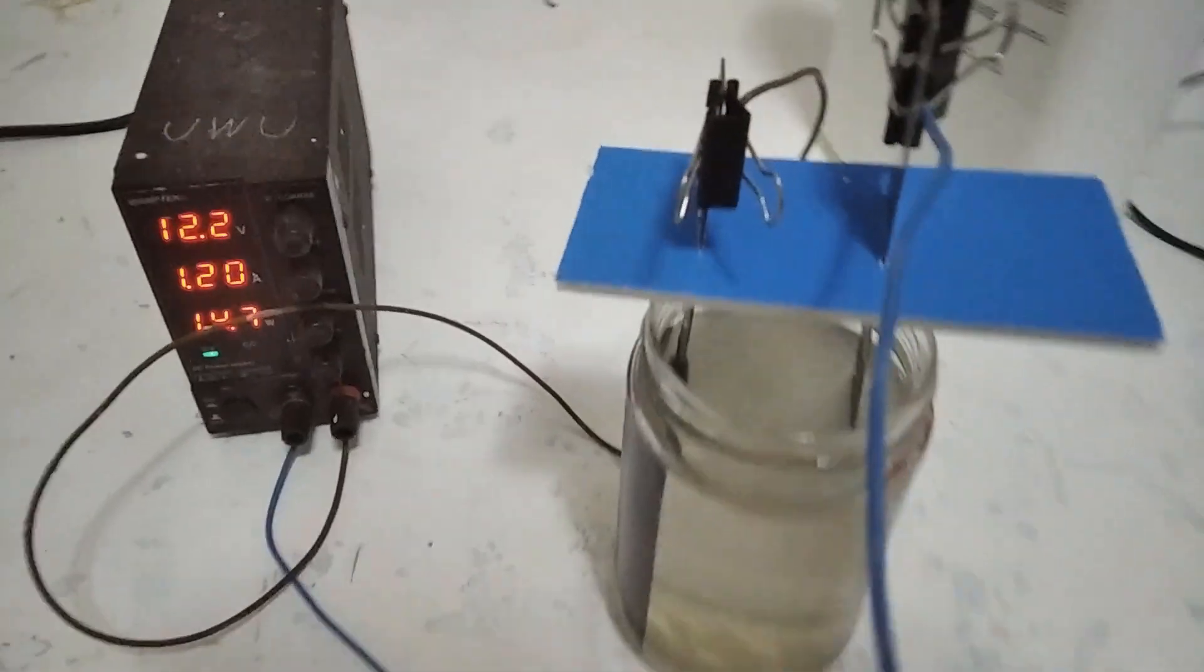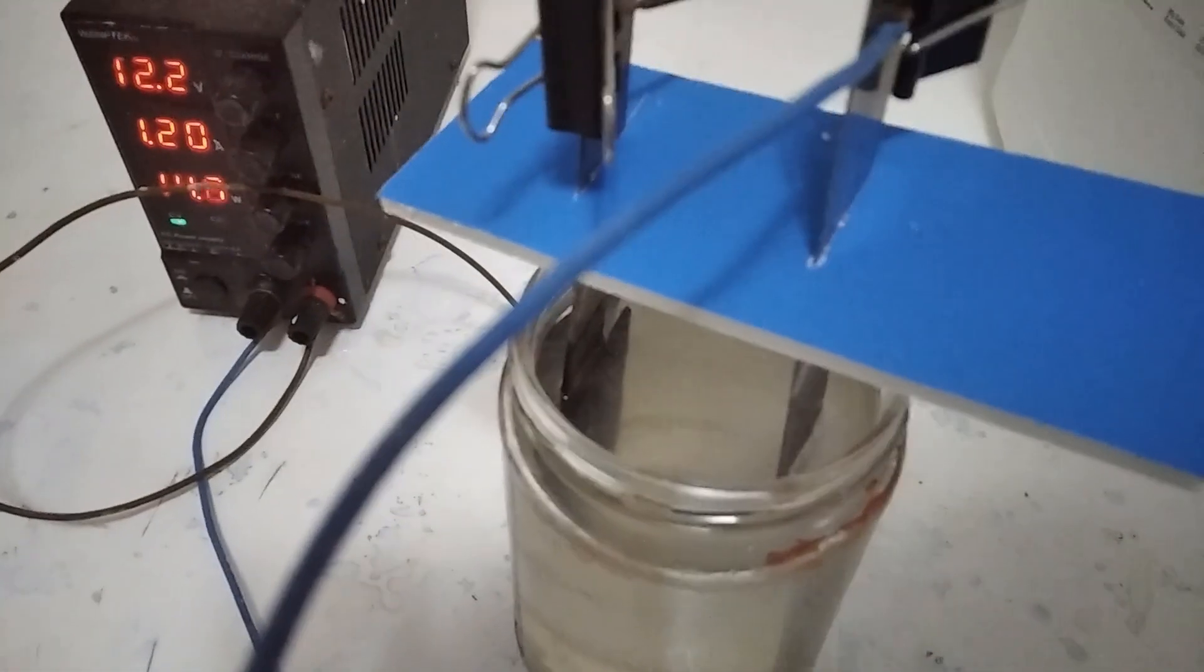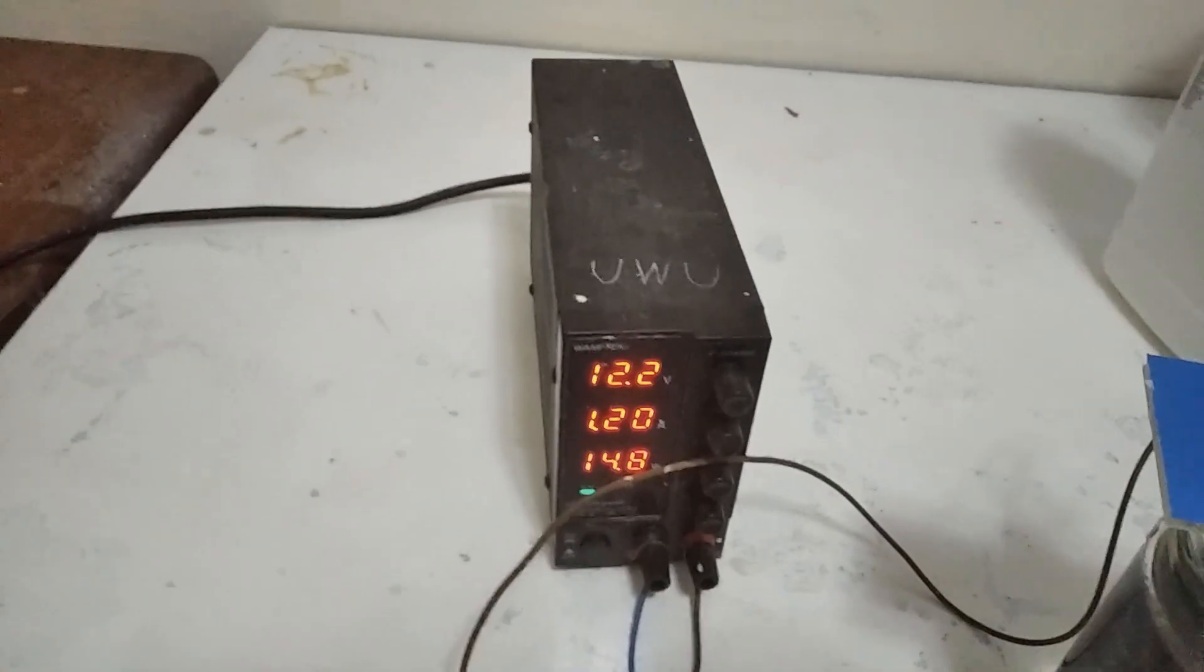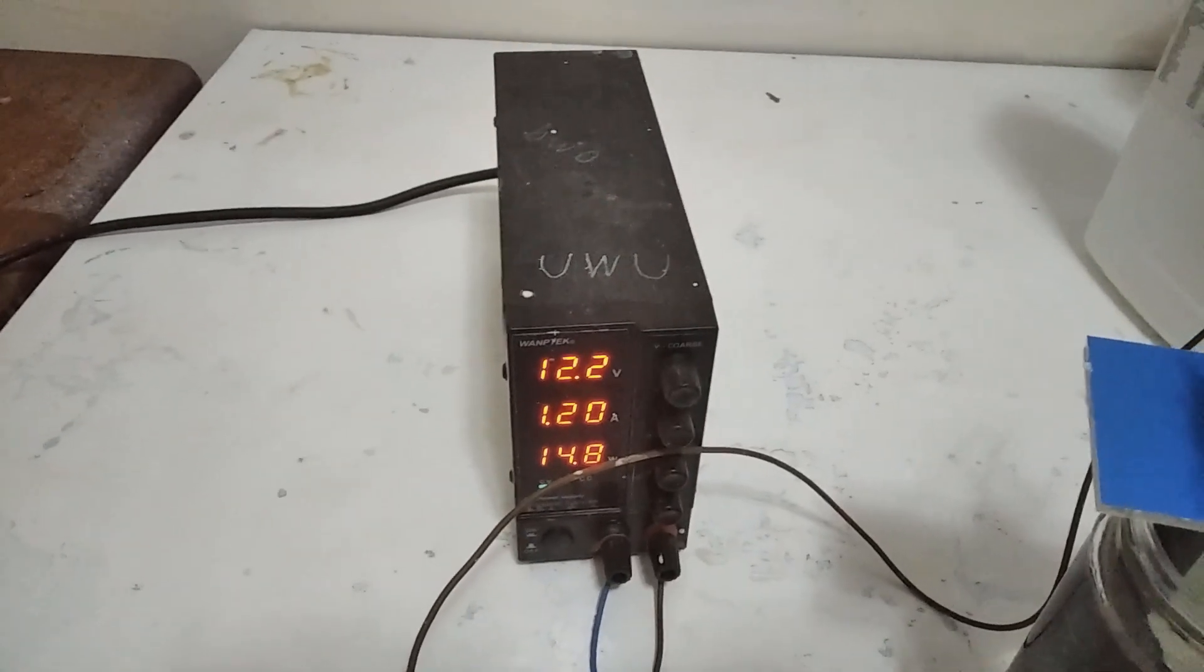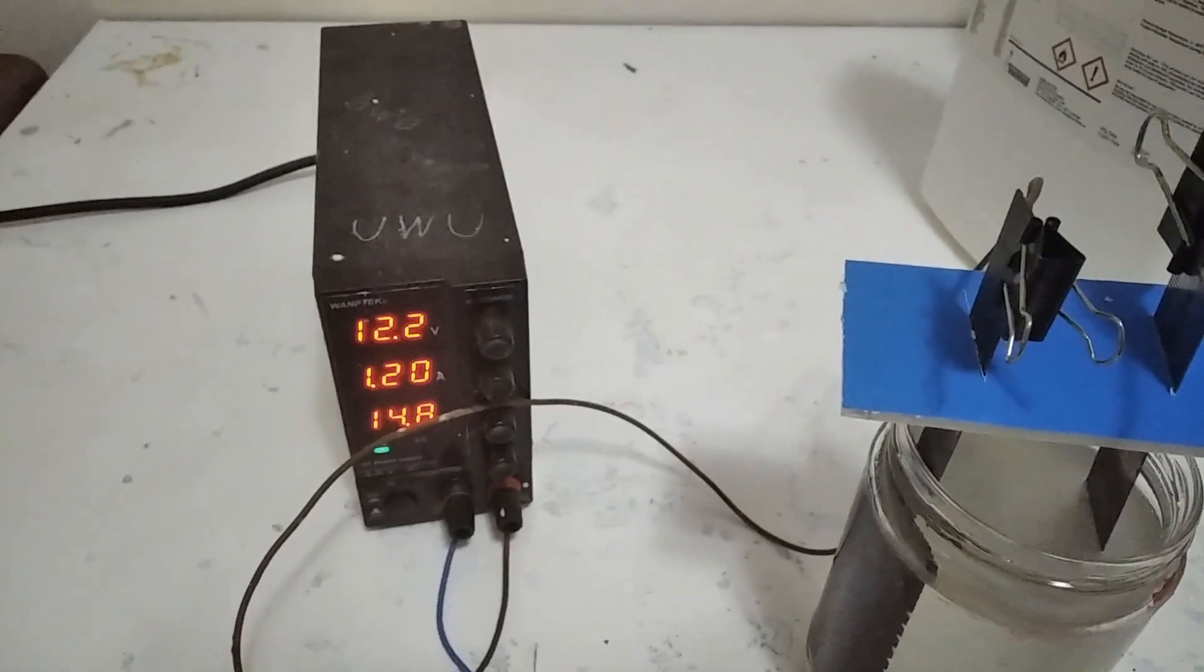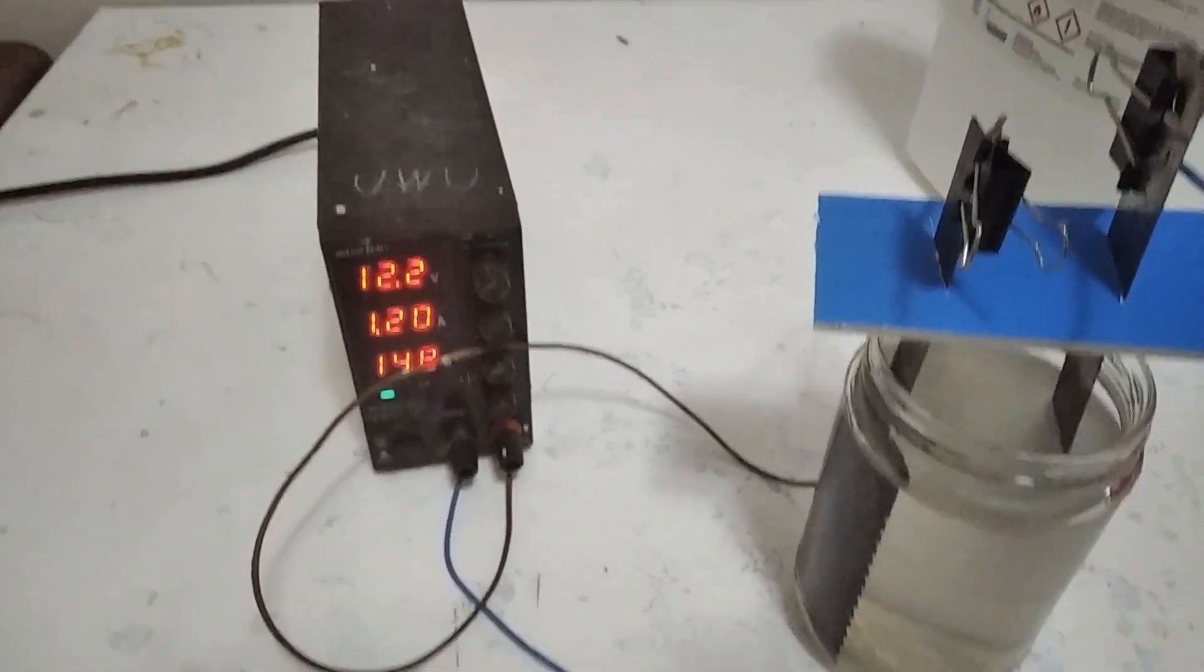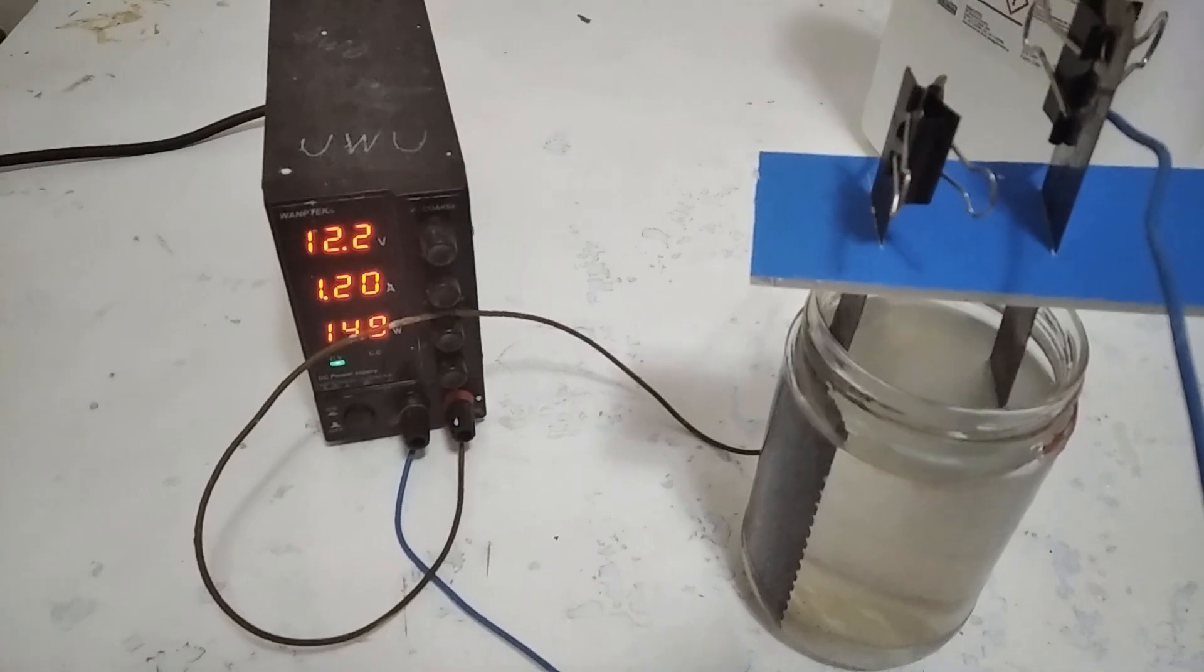The electrode seems to be stable without degradation because if this was unstable at 12 volts this would start dropping fast, but it ain't. It's actually rising. Let me do an alteration to this setup before continuing.